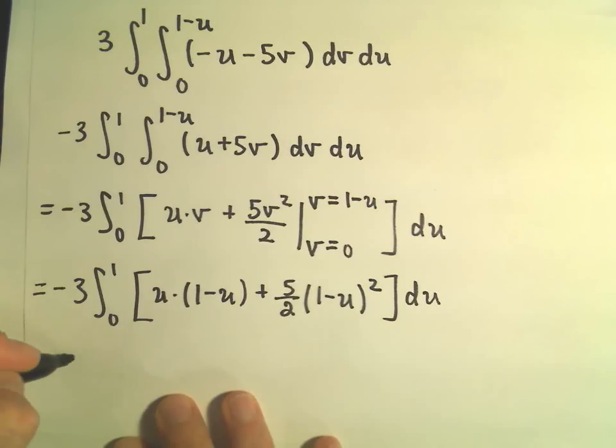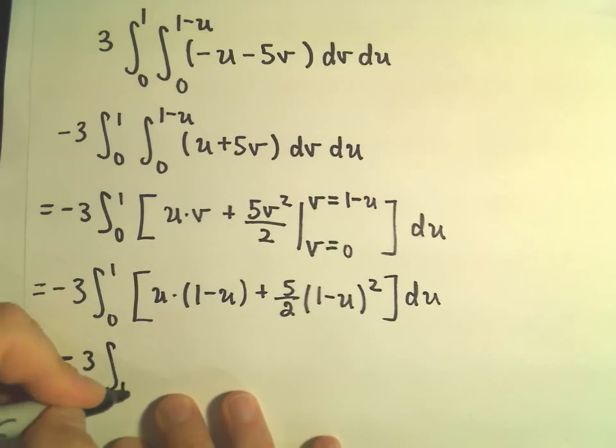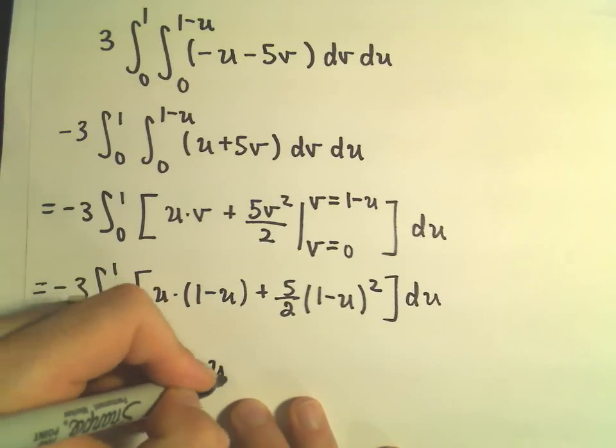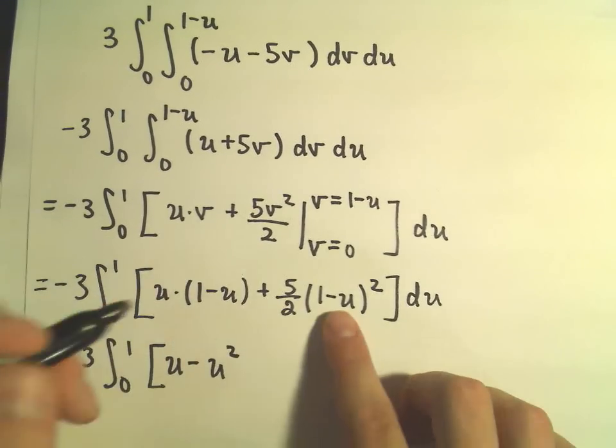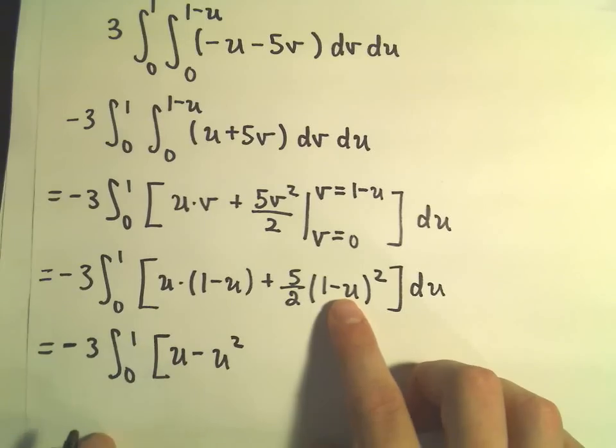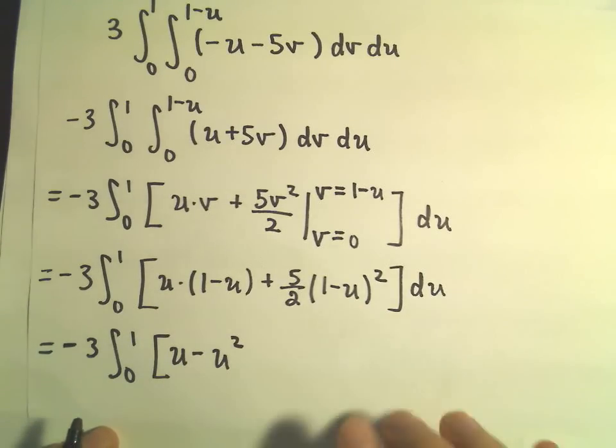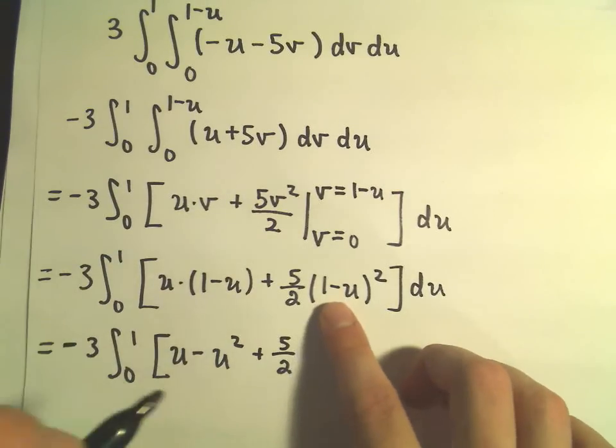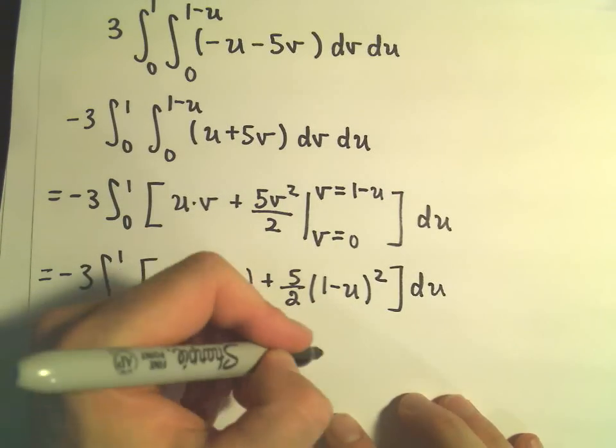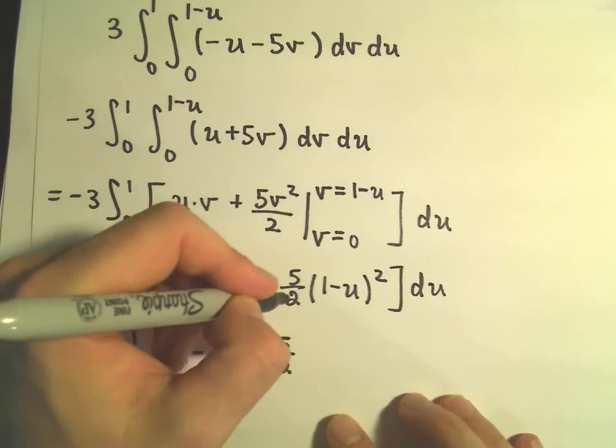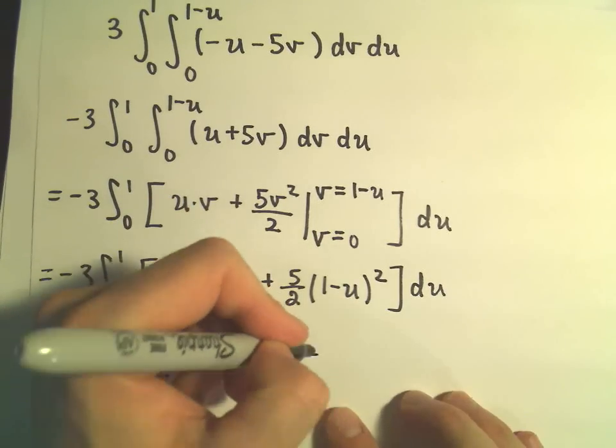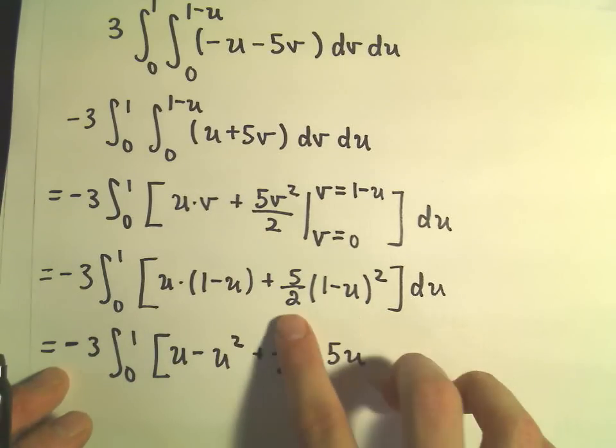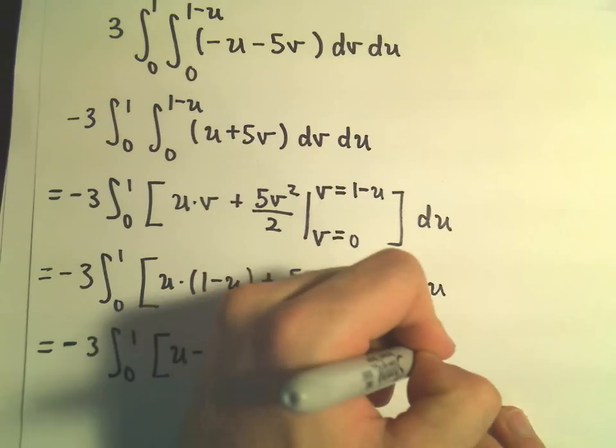All right, we've got to clean up our integrand here, or at least I'm going to. So if we distribute our u, we'll have u minus u squared. If we were to foil out 1 minus u, we would have 1 minus 2u plus u squared, so it looks like we would get a 5 halves. We would get a negative 2u, so we would have 5 halves times negative 2u, so that would give us a negative 5u. We would have a positive u squared, and we would have to multiply that by 5 halves.